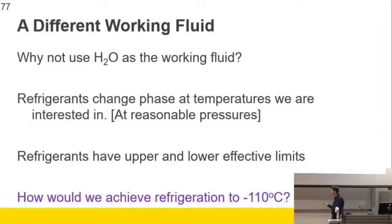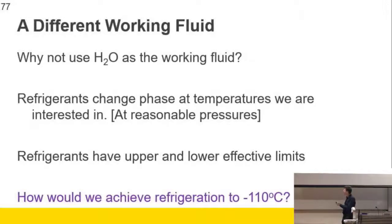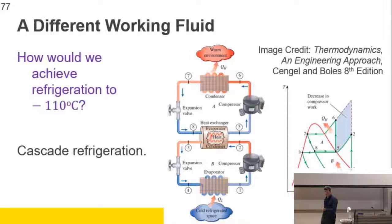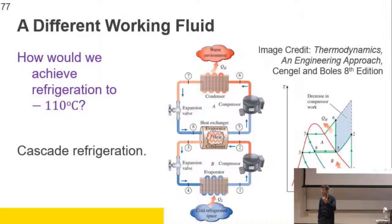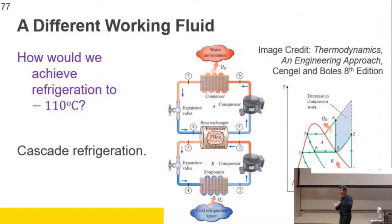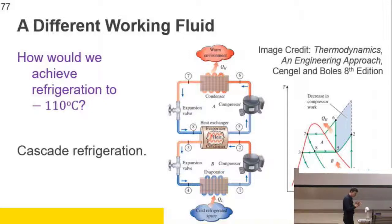So how do you achieve cold refrigeration? Two things: one is you use a different refrigerant - more volatile refrigerants. The colder you want to go, the lower the boiling temperature has to be as a general rule. And the other thing is you use cascading.